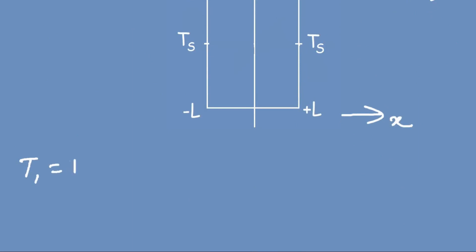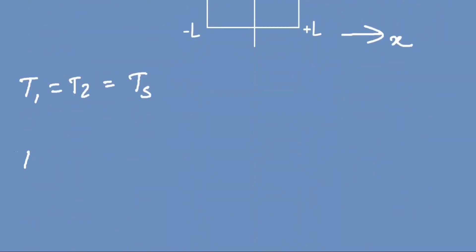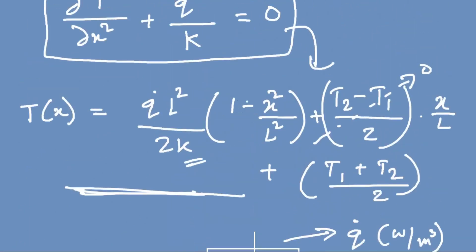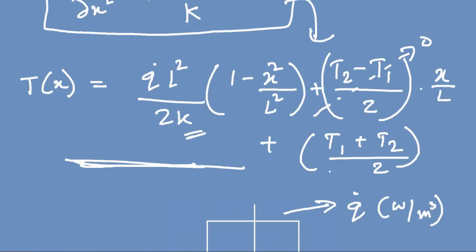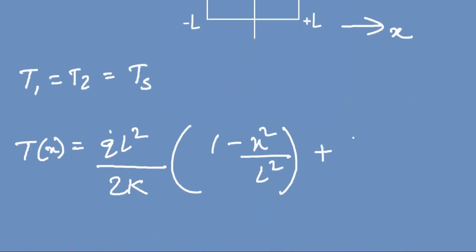If we put T1 equals T2 equals Ts into the general equation, the middle term (T2 minus T1) becomes zero. The last term (T1 plus T2)/2 becomes Ts·2/2 which is simply Ts. So T(x) equals q_dot·L² divided by 2k times (1 minus x²/L²) plus Ts.